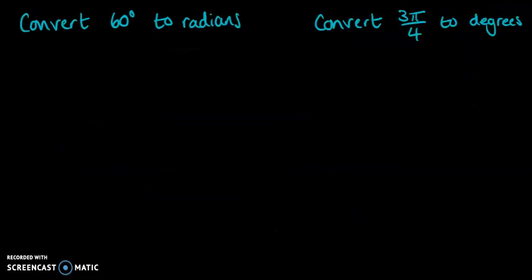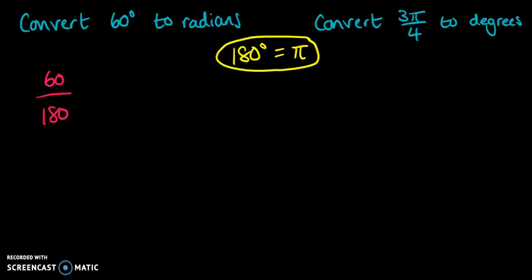So we're going to take a look at two examples of doing those conversions, one going each way. Remember that 180 degrees equals π. That's our starting point for any of this. So for 60 degrees, we can see how much of a proportion of 180 is 60 degrees. 60 over 180...